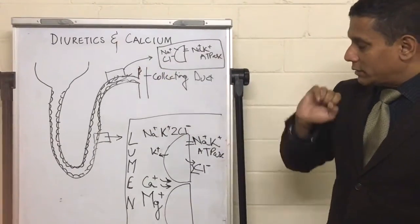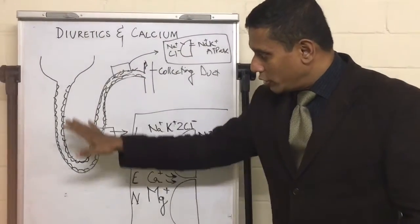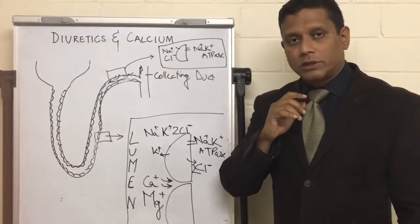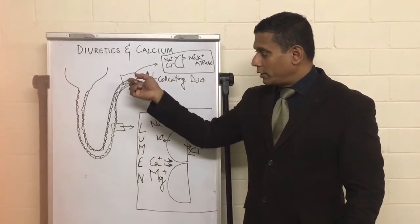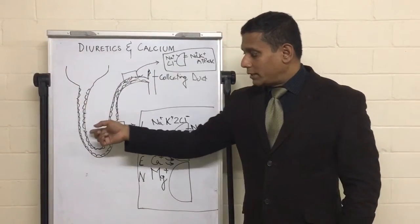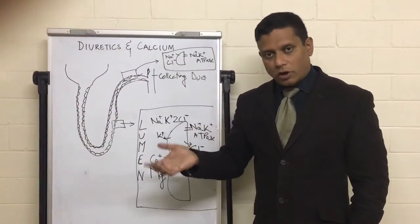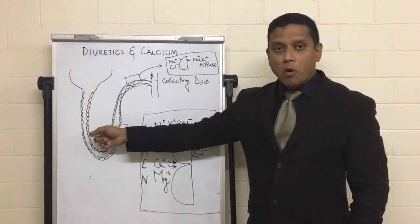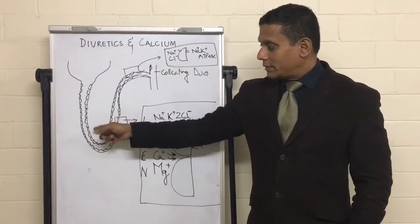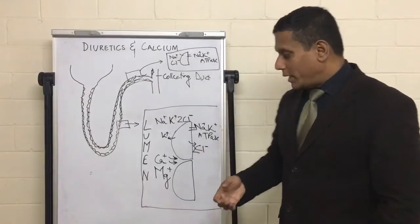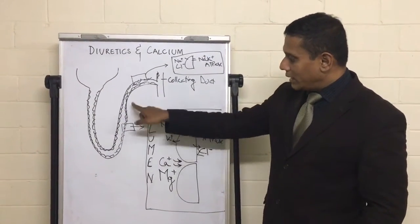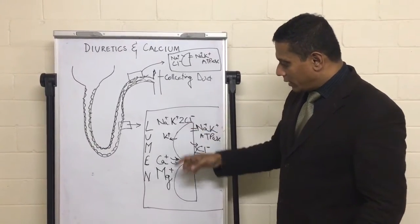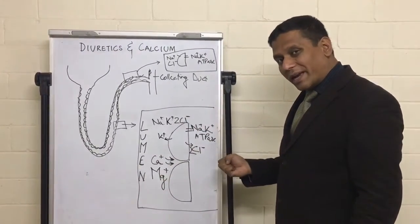If I block this with thiazide diuretic, what do you think the rest of my kidney tubules are going to do? They don't like anything to be blocked, so if you block this portion, this portion of the tubule is going to say, 'Fine, you block me there, I'm going to act more here.' So these channels start to act more than they would normally act, which means we draw back more sodium-potassium-chloride in the ascending limb of loop of Henle. But remember, when we do that, we also end up drawing back more calcium.